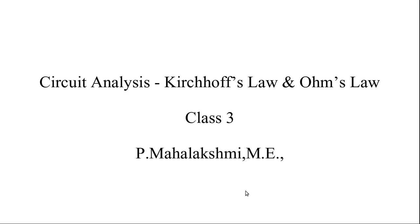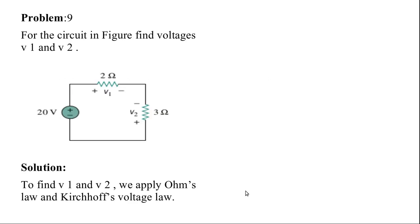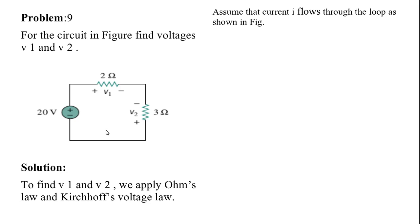We have seen Kirchhoff's voltage law and Ohm's law in the last video. Now we are going to see some problems solved using KVL and Ohm's law. We have seen about eight problems so far; this is the ninth problem. For the circuit in the figure, find the voltages V1 and V2. To find the voltages, you have to use Kirchhoff's voltage law. Assume that current i is flowing through this circuit.